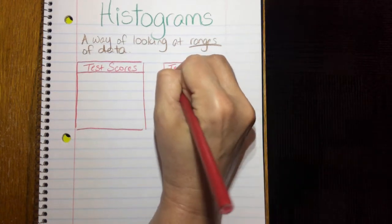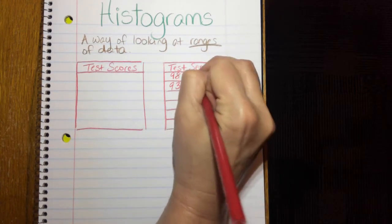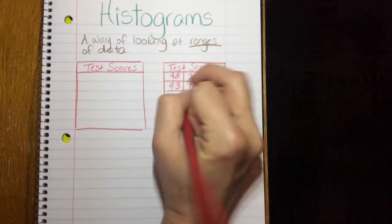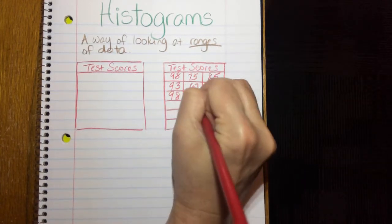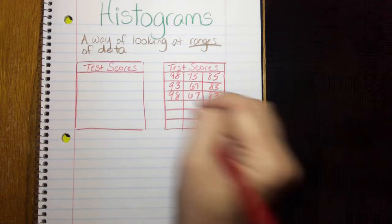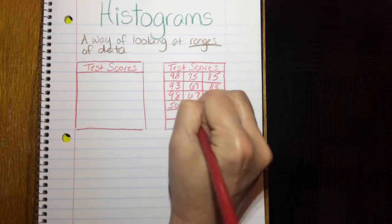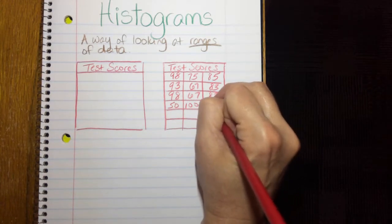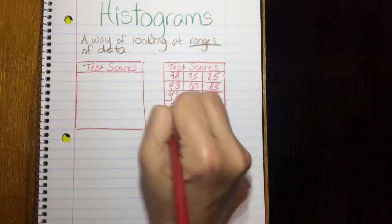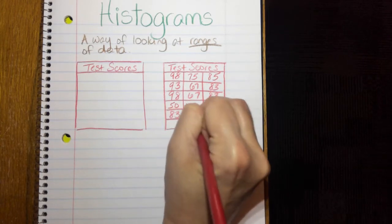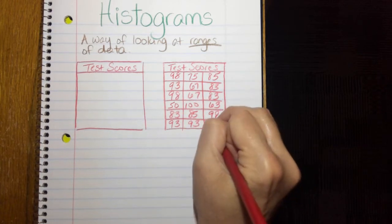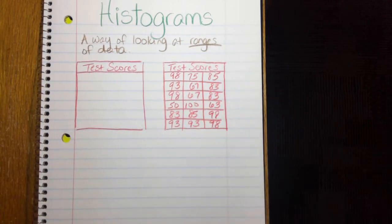And I'm actually going to do this two different ways to kind of show you what I mean by looking at ranges. So test scores, I'm going to say that there were a bunch of kids taking a test. 18 kids took a test. So now I'm just going to make up some scores for these kids. Some kids did well, some kids not so much.